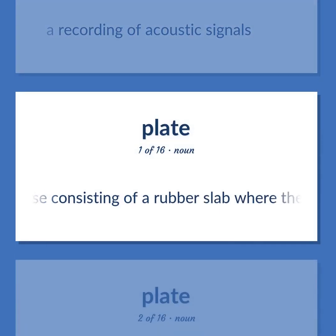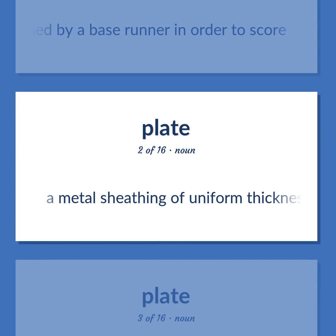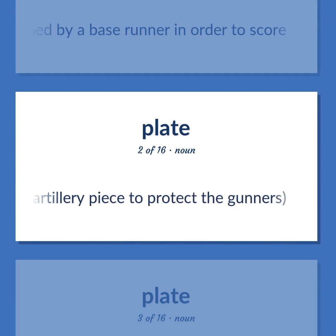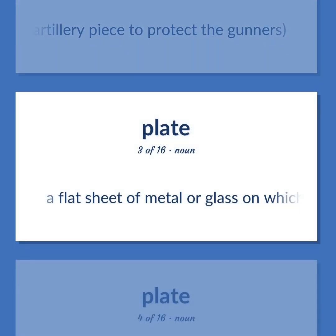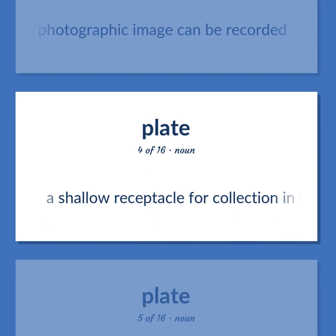Plate: Baseball — base consisting of a rubber slab where the batter stands; it must be touched by a base runner in order to score. A metal sheathing of uniform thickness, such as the shield attached to an artillery piece to protect the gunners. A flat sheet of metal or glass on which a photographic image can be recorded. A shallow receptacle for collection in church.